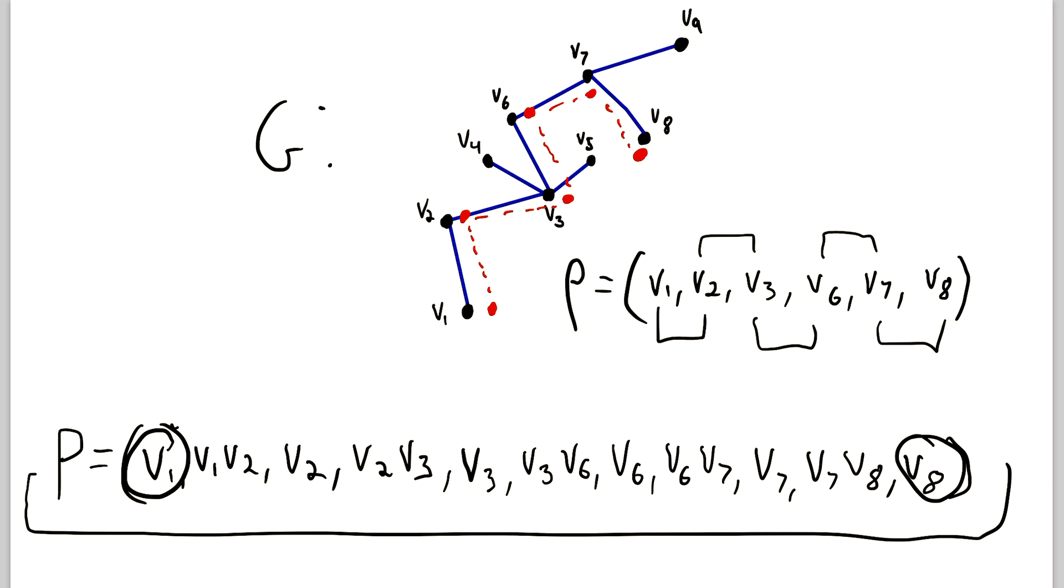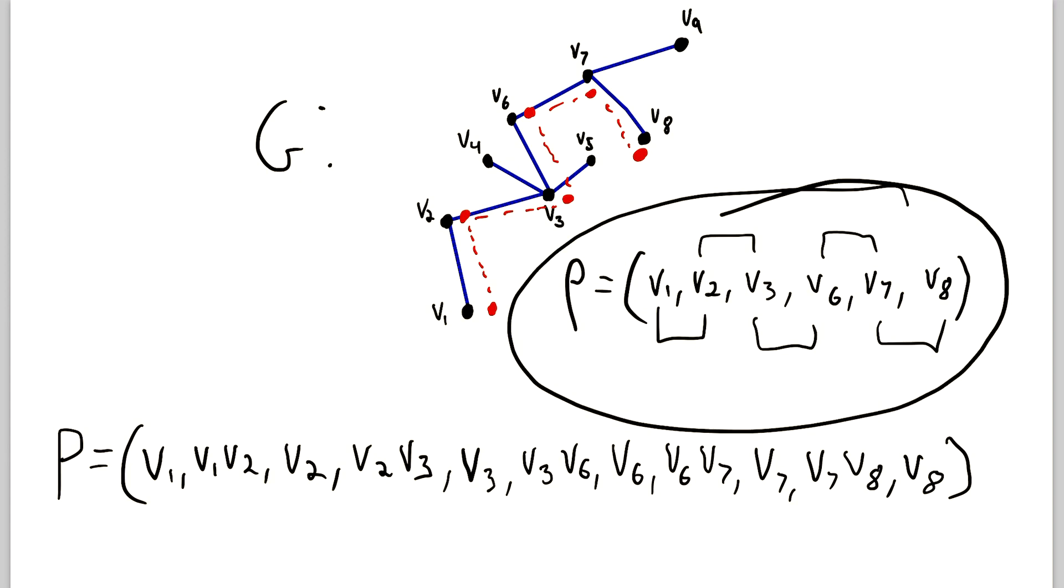And of course, after each vertex, you put the edge that you traveled, then the vertex you're at, then the edge you travel, and so on. Now, as you can tell, this way of writing out the path is much more concise than this way. And I prefer this way because it conveys the same information much more simply.